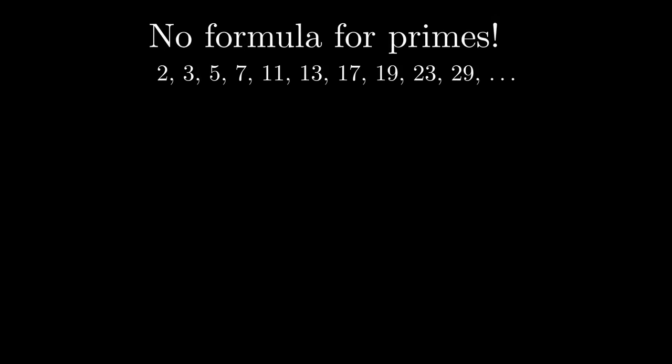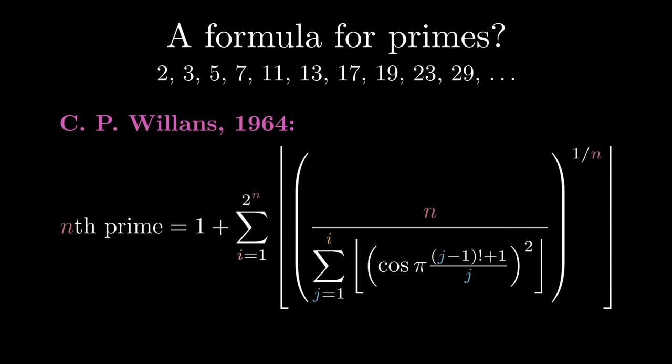You may have heard that there's no formula for the prime numbers. But that's not exactly true. In 1964, C.P. Willans found this beast of a formula for the nth prime number.